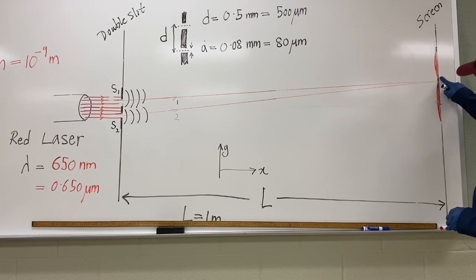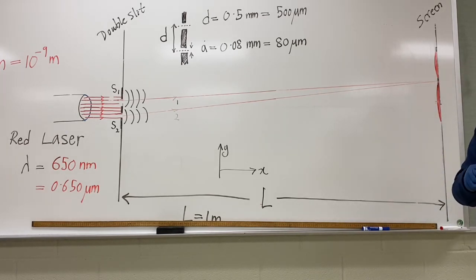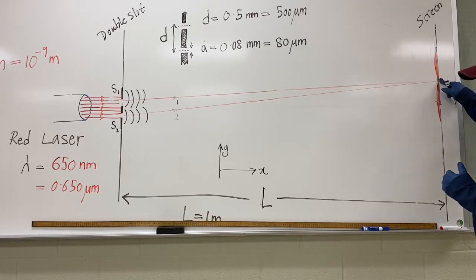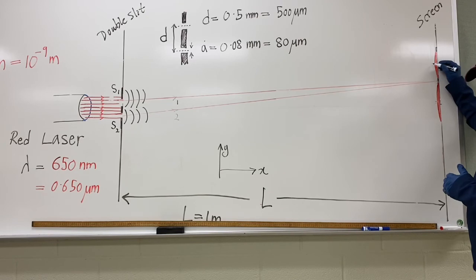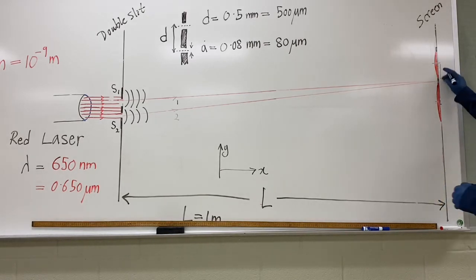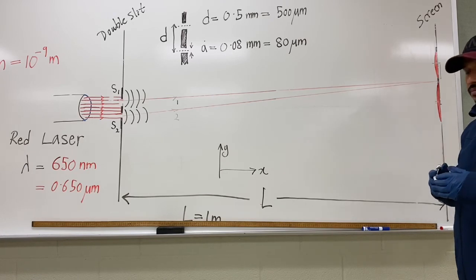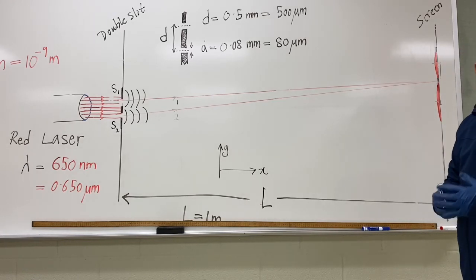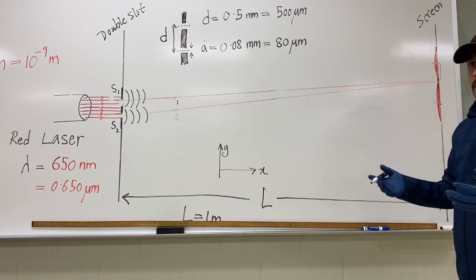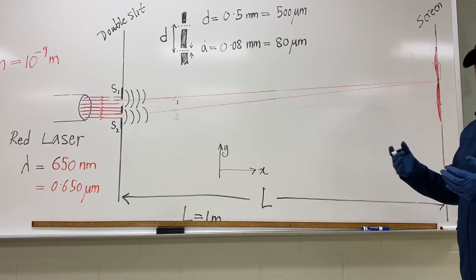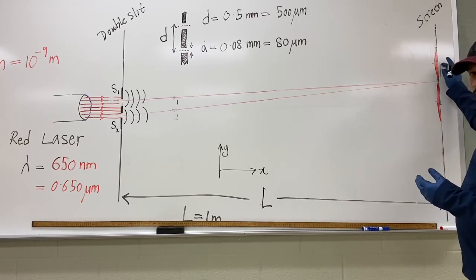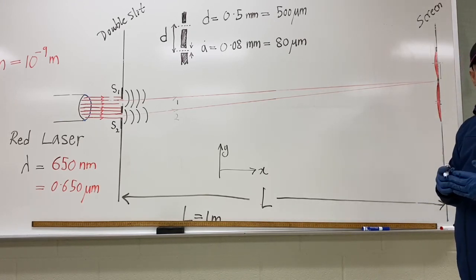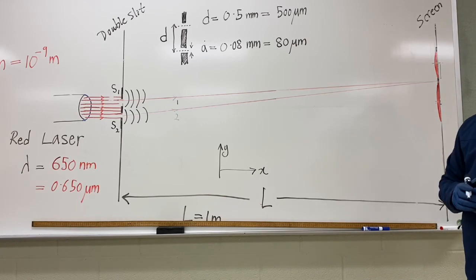When you go further up from the first minima, the path length difference changes — from half a wavelength it gradually increases to one full wavelength, where you again have a bright fringe. In between these two points you have partial constructive or destructive interference, so the resulting wave has some amplitude and you see some brightness. When the path difference reaches one wavelength, the amplitude of the resulting wave is maximum, giving maximum brightness.